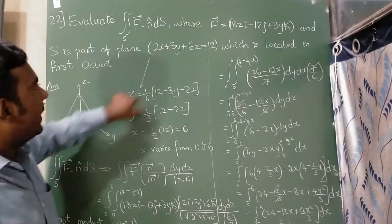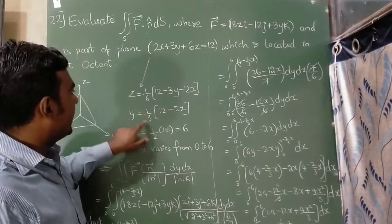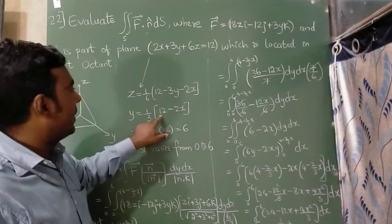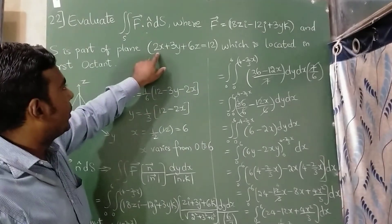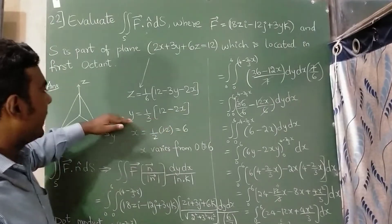Now y. When I am taking y, I will consider z as 0. So this 3 will come in the denominator. 12 I have written. What is left? Only 2x. Take it on the right hand side, so it will become minus 2x. So y is over.